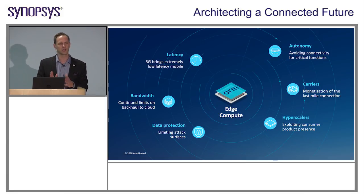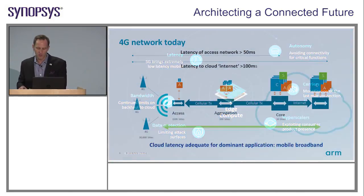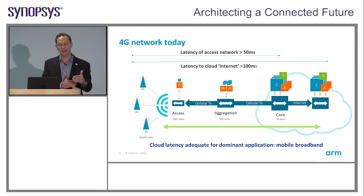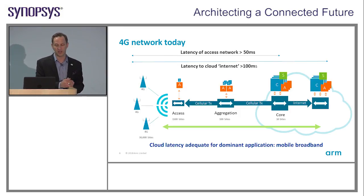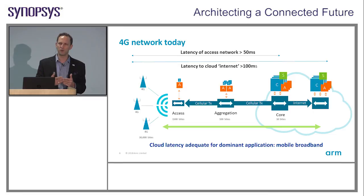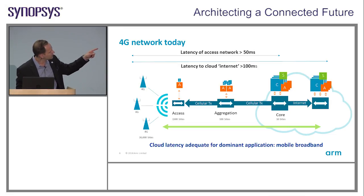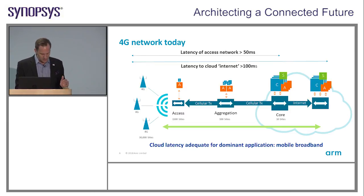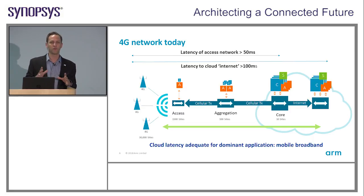One way to look at this is to consider the cellular networks that exist today and what's coming in the future. Today the 4G network has a latency of about 50 milliseconds to access the network and about 100 milliseconds to get to the cloud. That kind of latency profile is okay for today's applications — it's okay for web-based services and mobile broadband streaming applications where latency is not so critical. There's also a relatively small number of base station sites for 4G networks today, in the tens of thousands, and that's okay from a coverage perspective — but as we go forward, that's going to evolve.